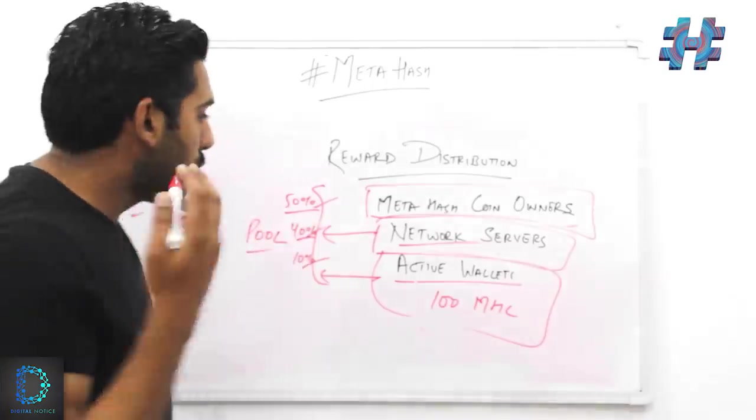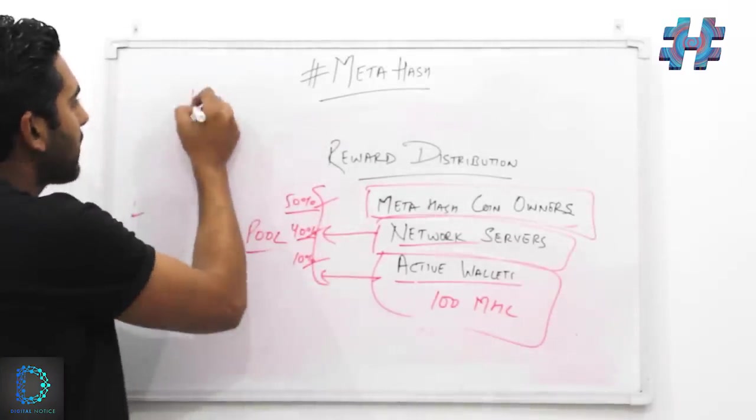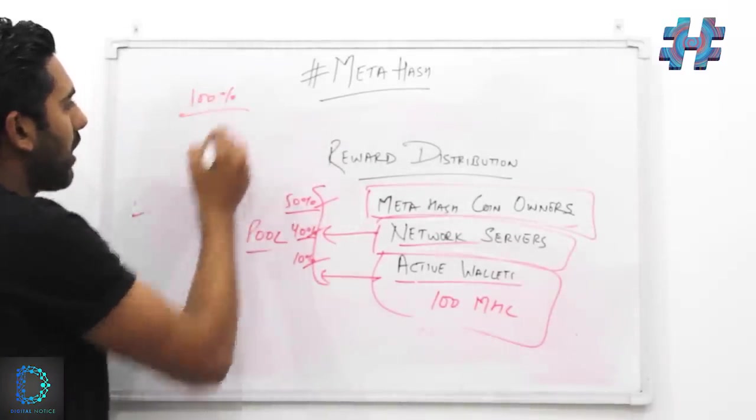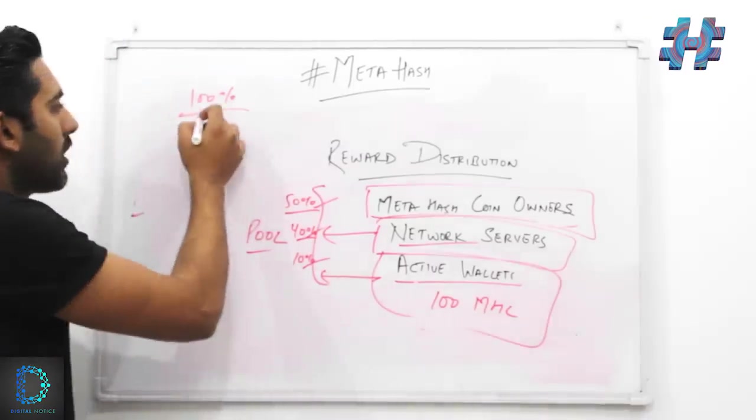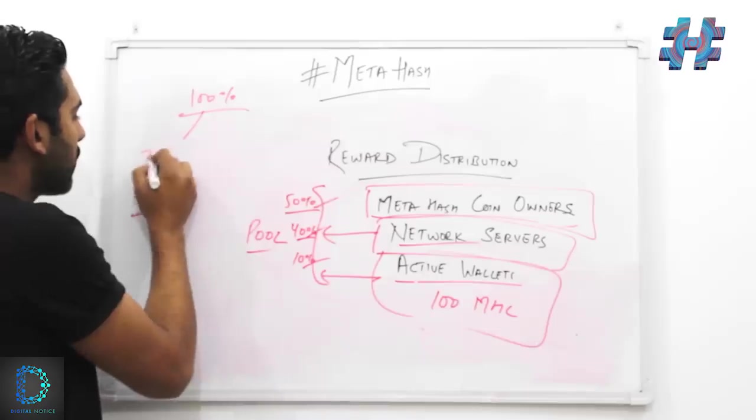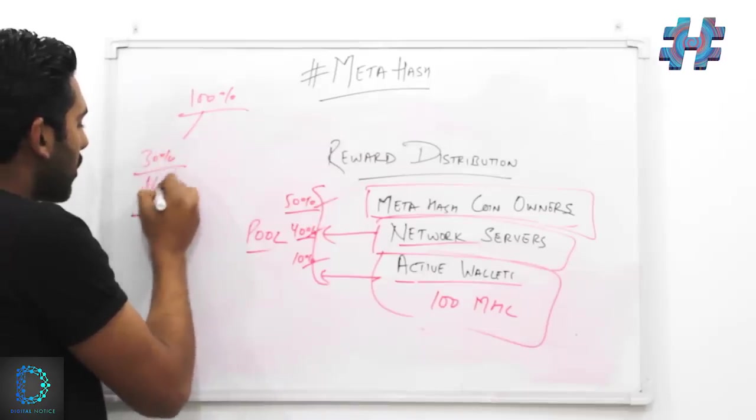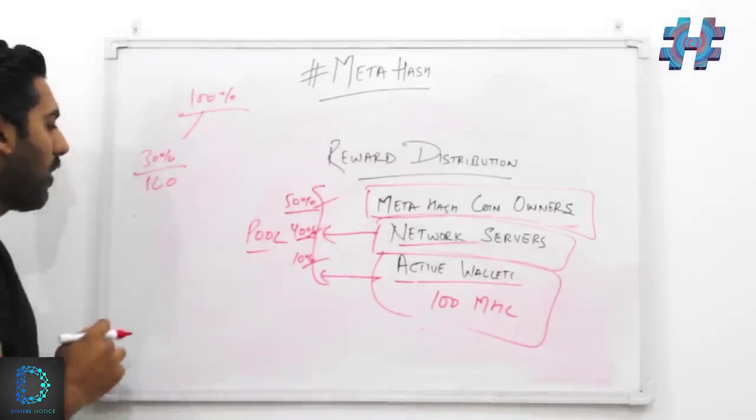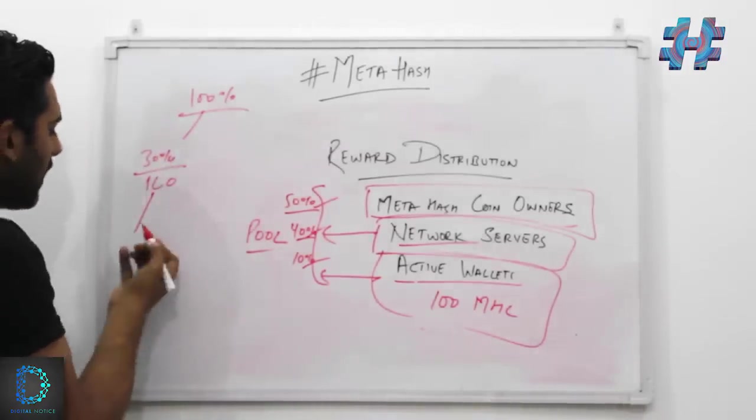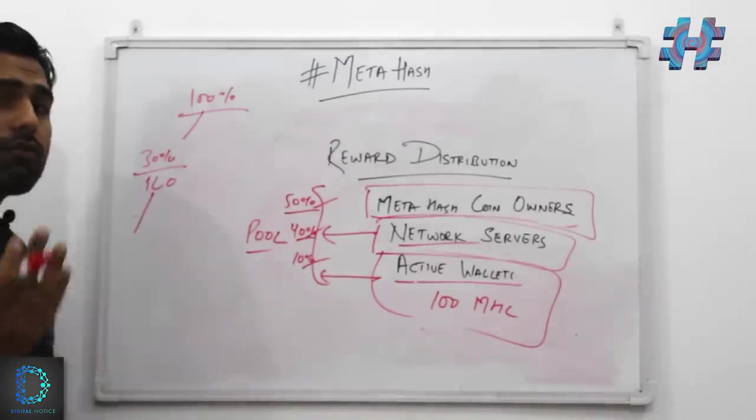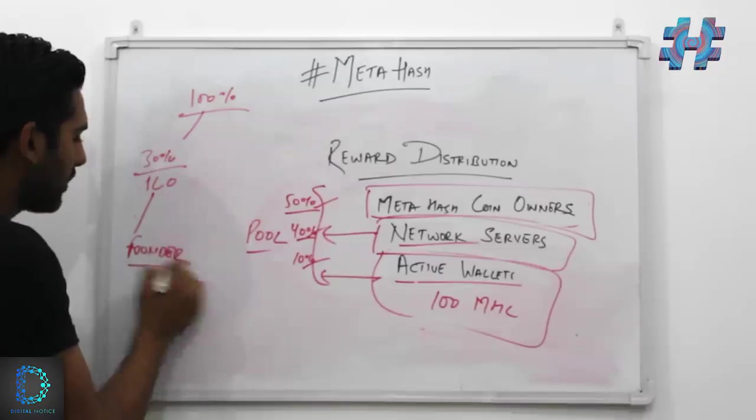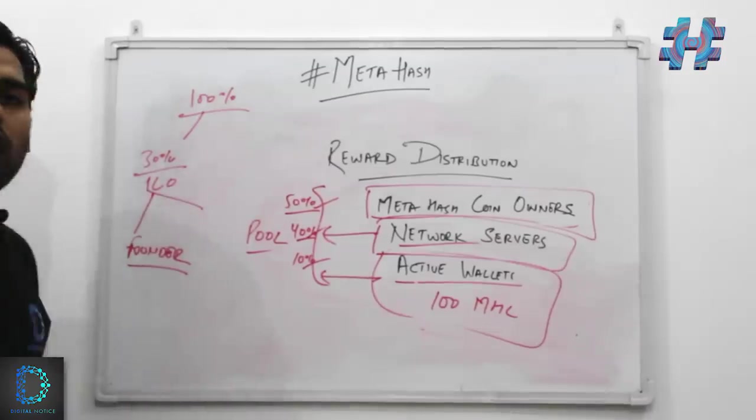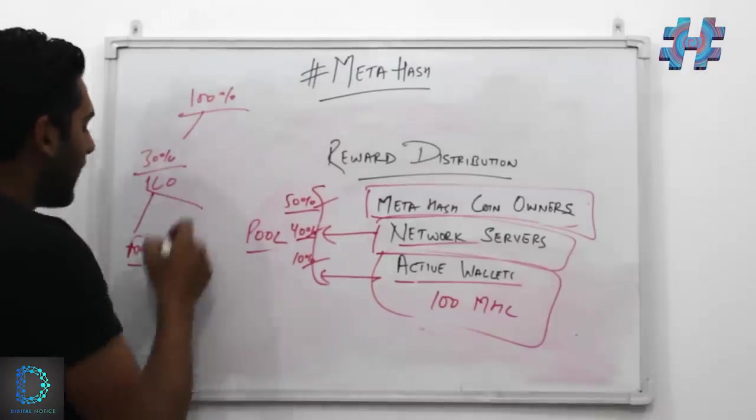MetaHash coin owners—who exactly are they? See, suppose in the beginning, this is about the total circulation that has to be taking place. Of the total 100% of the coins, 30% of the coins came out in the form of ICO, out of which a certain percentage was given to the founders of the project and the early investors in the ICOs.